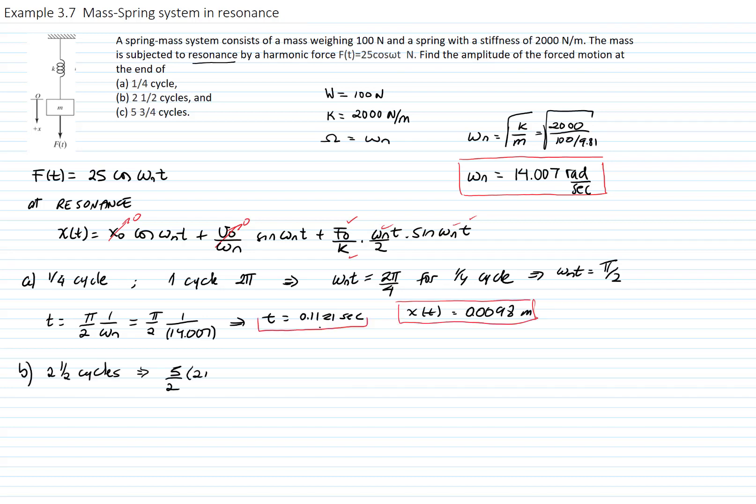In the second case, we want to find the response for 2 and a half cycles. That would mean 5/2 times 2π, which gives me 5π. For 5π, I will find the time, which is 5π over ωₙ. The time equals 1.1121 seconds. I put that time into my response equation, and I get that the response is 0 meters.